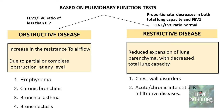Based on the pulmonary function test, lung diseases are categorized broadly into obstructive and restrictive diseases. The examples for obstructive lung diseases, as we saw earlier, were emphysema, chronic bronchitis, bronchial asthma, and bronchiectasis. In the last session we had discussed in detail about emphysema.